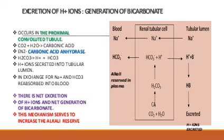This occurs in the proximal convoluted tubule. In the renal tubular cells, carbon dioxide reacts with water to form carbonic acid. This is acted upon by the enzyme carbonic anhydrase to form bicarbonate and hydrogen ions. The hydrogen ions are secreted into the tubular lumen, and the bicarbonate goes into the plasma in exchange for sodium ions, which are moved out of the tubular lumen into the plasma.